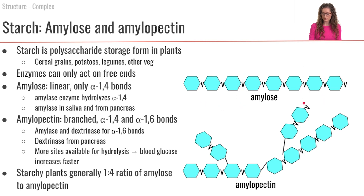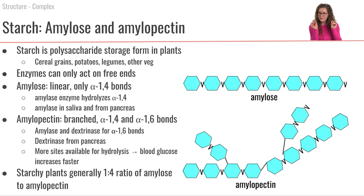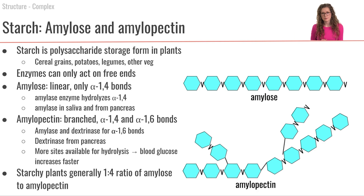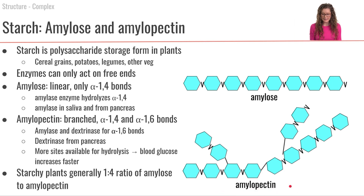The enzyme amylase can hydrolyze the alpha-1,4 linkages in amylose, working from the terminal ends. Humans have amylase in saliva, so amylose digestion begins in the mouth; the pancreas also produces amylase secreted into the small intestine. The other form of starch is amylopectin, which is branched. Its linear portions have alpha-1,4 glycosidic linkages, and its branch points have alpha-1,6 glycosidic linkages.